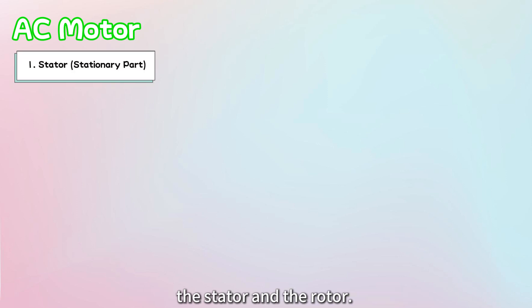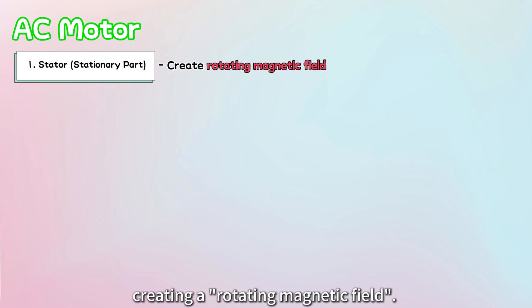An AC motor is made up of two main parts, the stator and the rotor. The stator, as its name suggests, is stationary, and plays a crucial role in creating a rotating magnetic field. But how exactly does this happen?